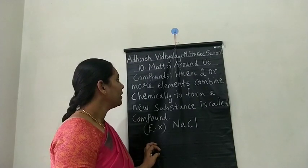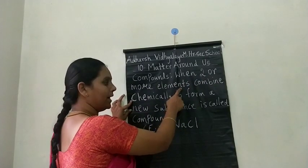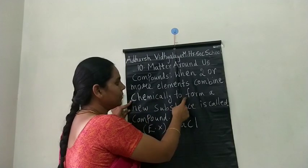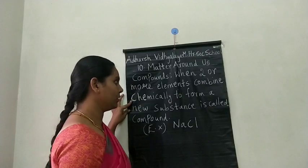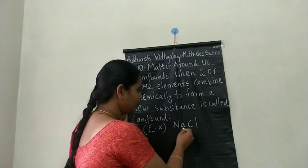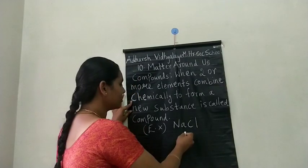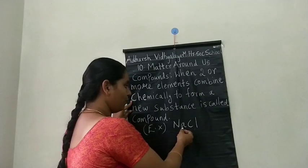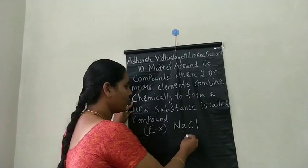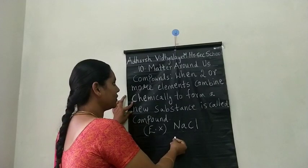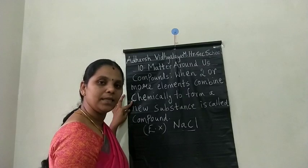Now we will see about compounds. When two or more elements combine chemically to form a new substance, it is called a compound. For example, NaCl is called a compound because two elements — sodium and chlorine — combine chemically to form NaCl.